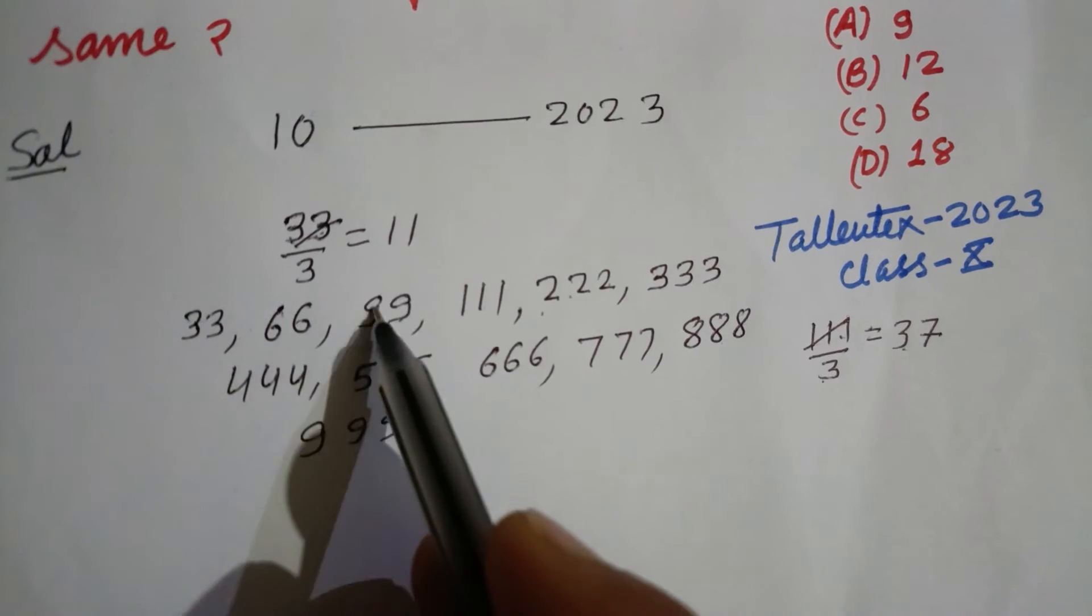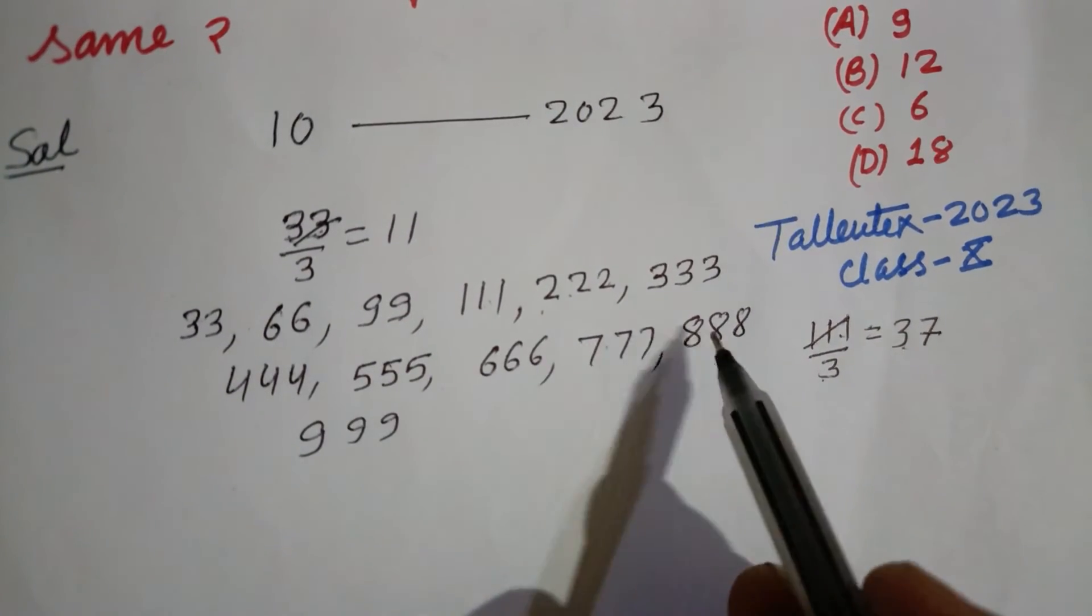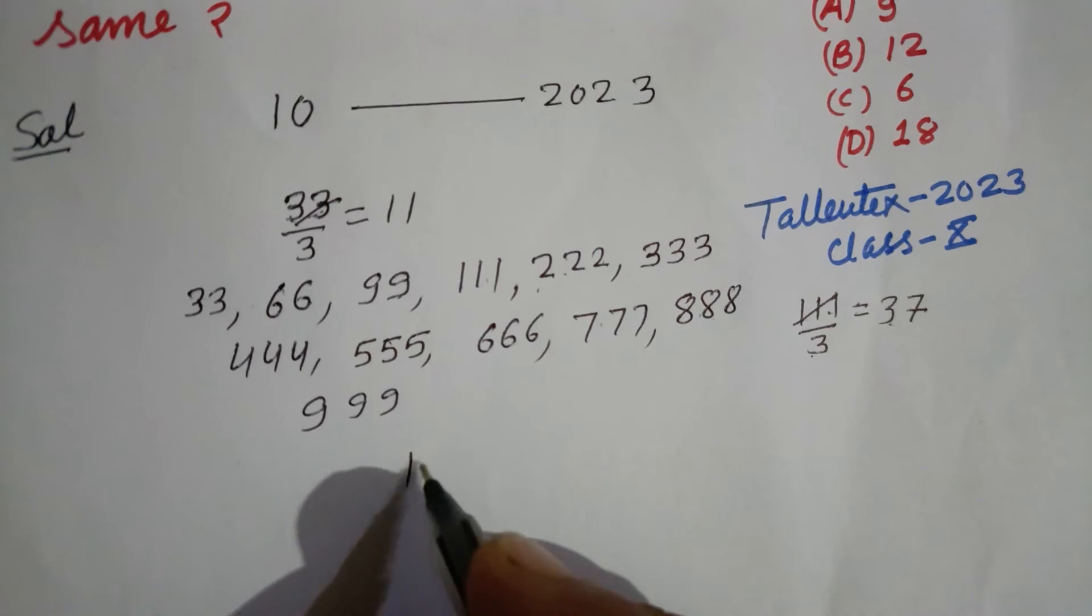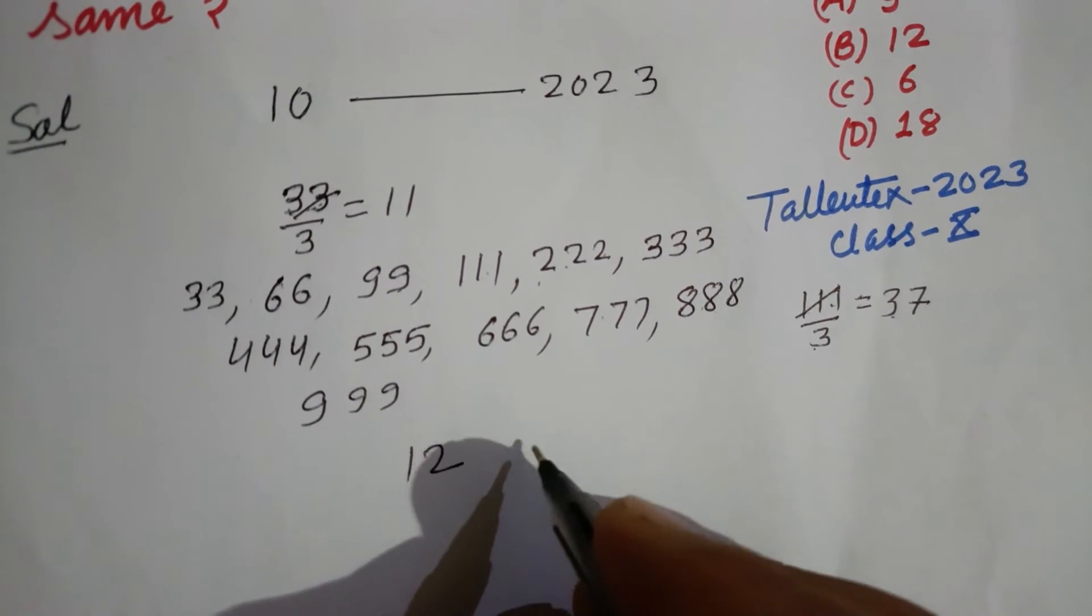Their number is 1, 2, 3, 4, 5, 6, 7, 8, 9, 10, 11, 12. So 12 is the answer - 12 numbers.